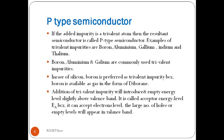P-type semiconductor: if the added impurity is a trivalent atom, the resultant semiconductor is called a P-type semiconductor. Examples of trivalent impurities are boron, aluminum, gallium, indium, and thallium. To make a P-type semiconductor, we dope the pure semiconductor with 3rd group elements. Boron, aluminum, and gallium are commonly used trivalent impurities. In the case of silicon, boron is preferred because it is available as a gas in the form of diborane.